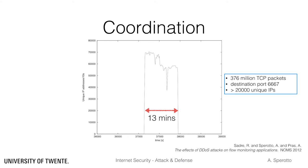Not all of them were active all the time, but it is clear from the picture that the bulk of them joined and stopped the attack at the same time, with an initial peak of 70,000 distinct attackers per 10 seconds.